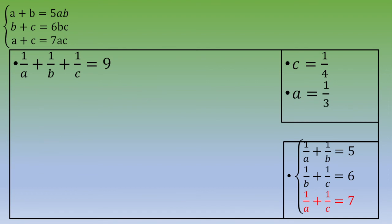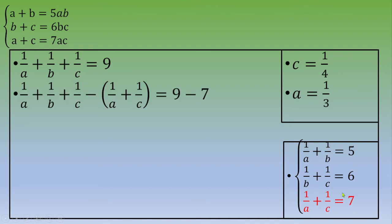Finally, to find B, we subtract the last equation: 1 over A plus 1 over B plus 1 over C minus (1 over A plus 1 over C) equals 9 minus 7. So we get 1 over B equals 2, which means B equals 1 over 2.